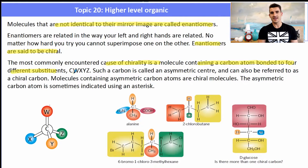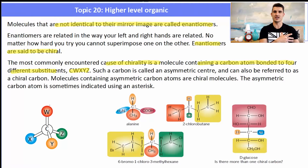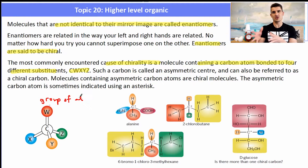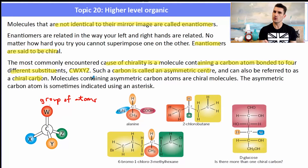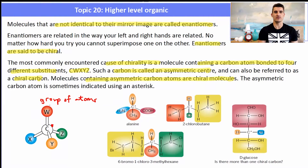The most commonly encountered type of chirality is a molecule with a carbon atom bonded to four different substituents — call them W, X, Y, and Z — but they could be groups of atoms, not just a single atom. That carbon with four different constituents is described as an asymmetric center and can also be referred to as a chiral carbon. Sometimes those chiral carbons have an asterisk next to them to indicate the location of the chiral carbon.